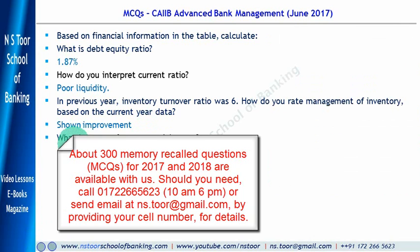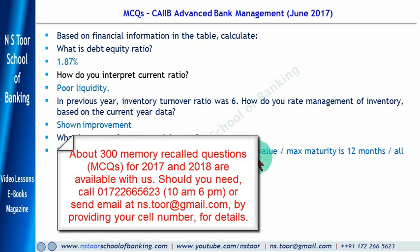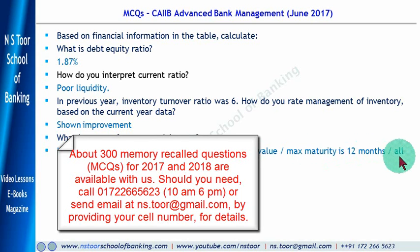What are the characteristics of commercial paper? It is issued as a promissory note — this is a characteristic. It is issued at a discount to face value — this is also a characteristic. Maximum maturity is 12 months — this is also a characteristic. So all these statements are characteristic statements in connection with commercial paper.